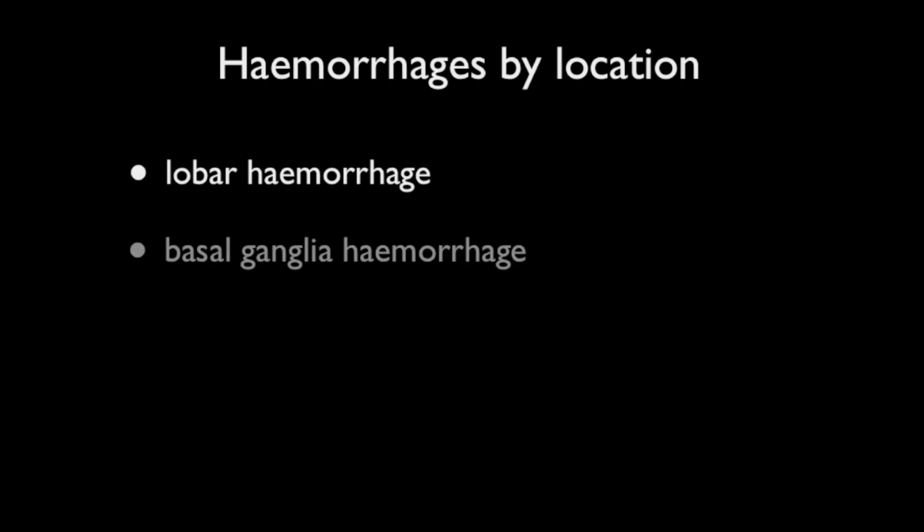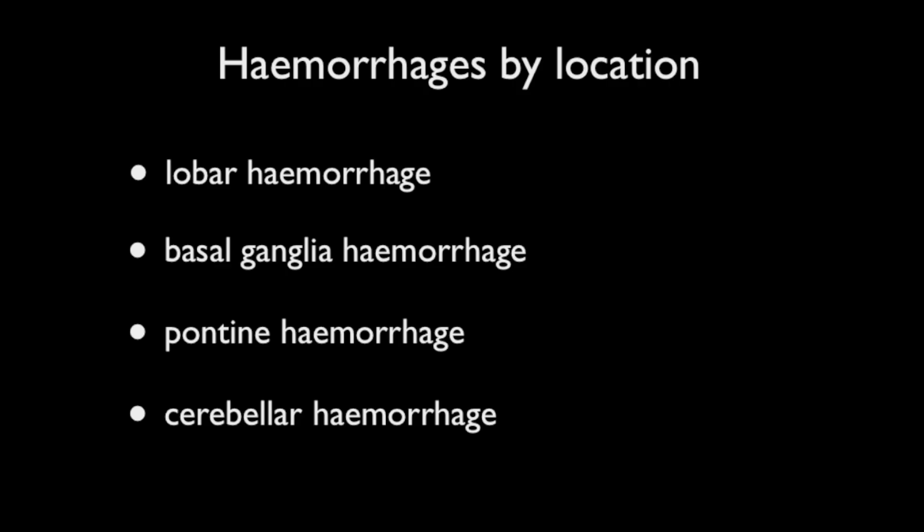Intracranial hemorrhages can also be divided according to location. Generally these are thought of as lobar hemorrhages located within the cerebral lobes superficially, basal ganglia hemorrhages arising from the grey matter of the basal ganglia and thalamus, and pontine hemorrhages.